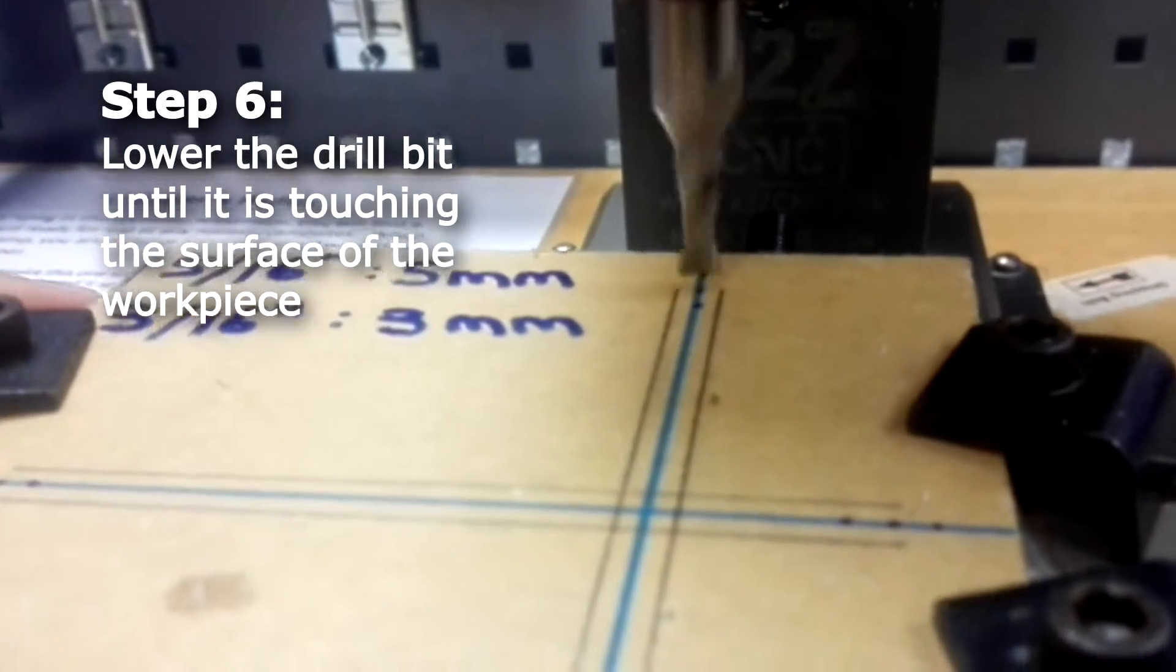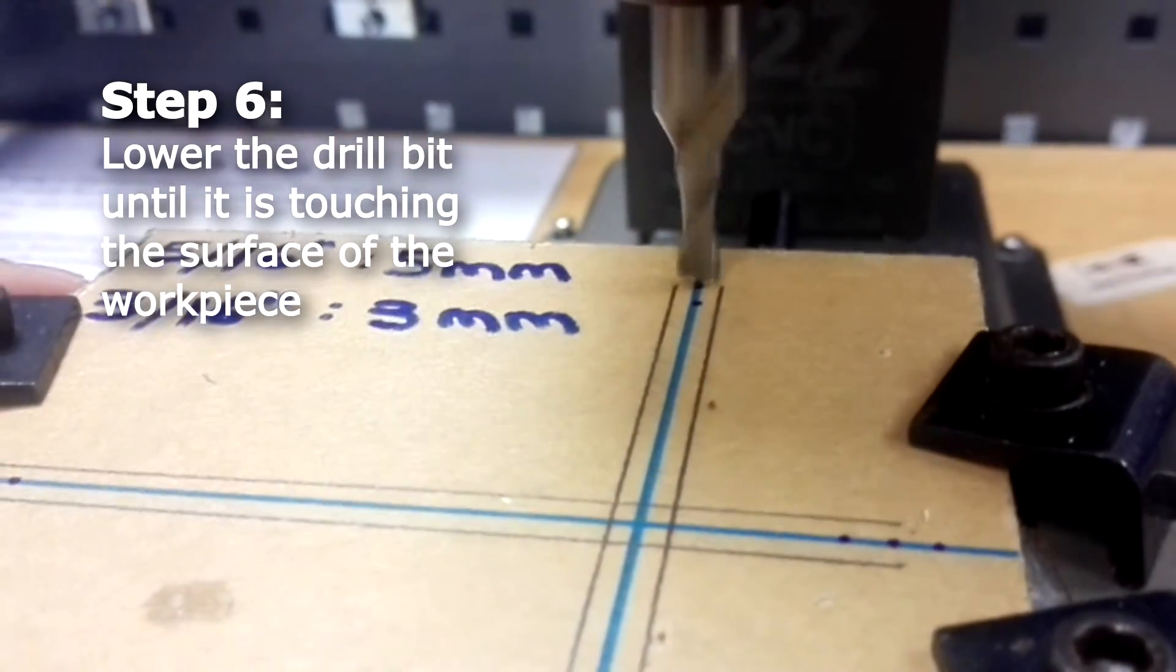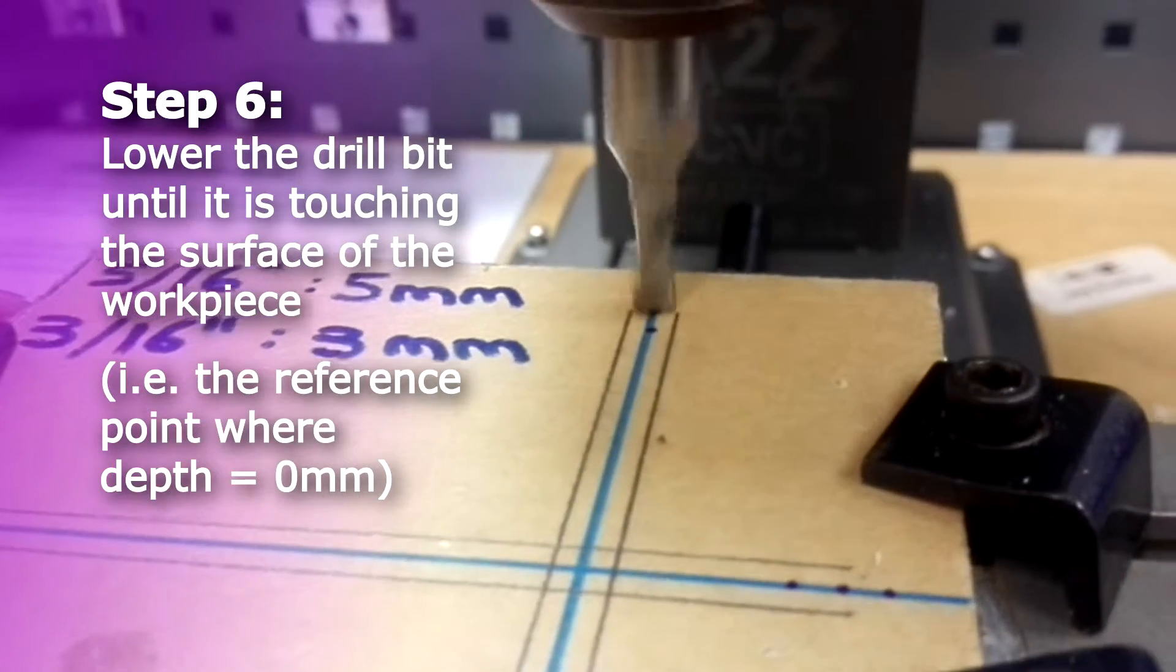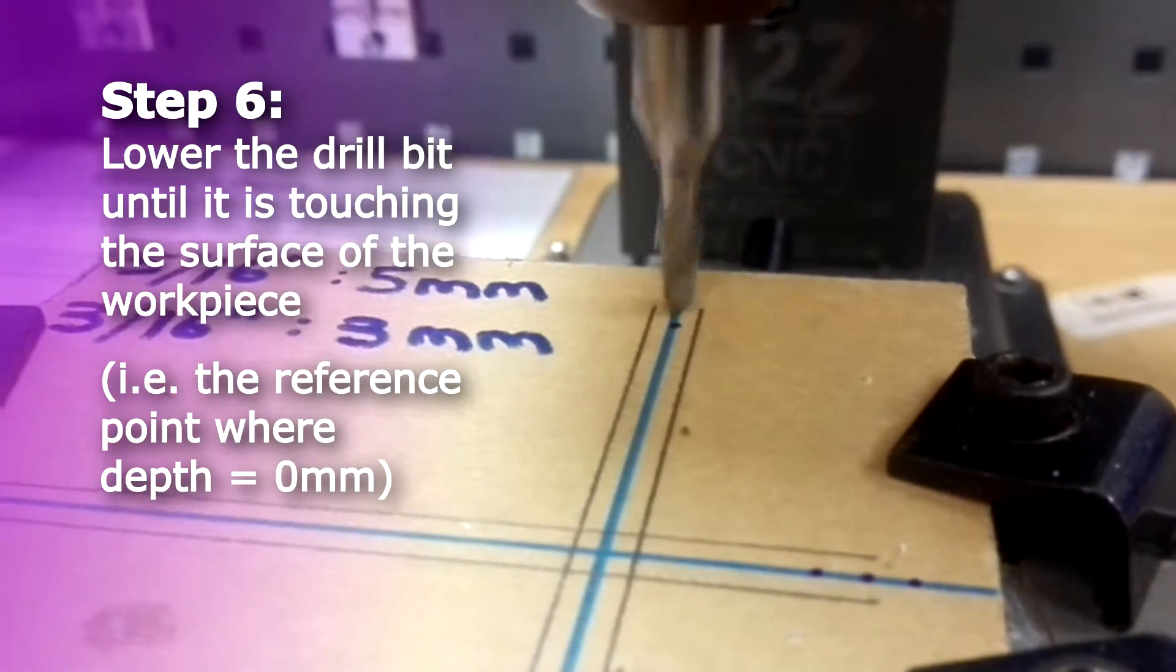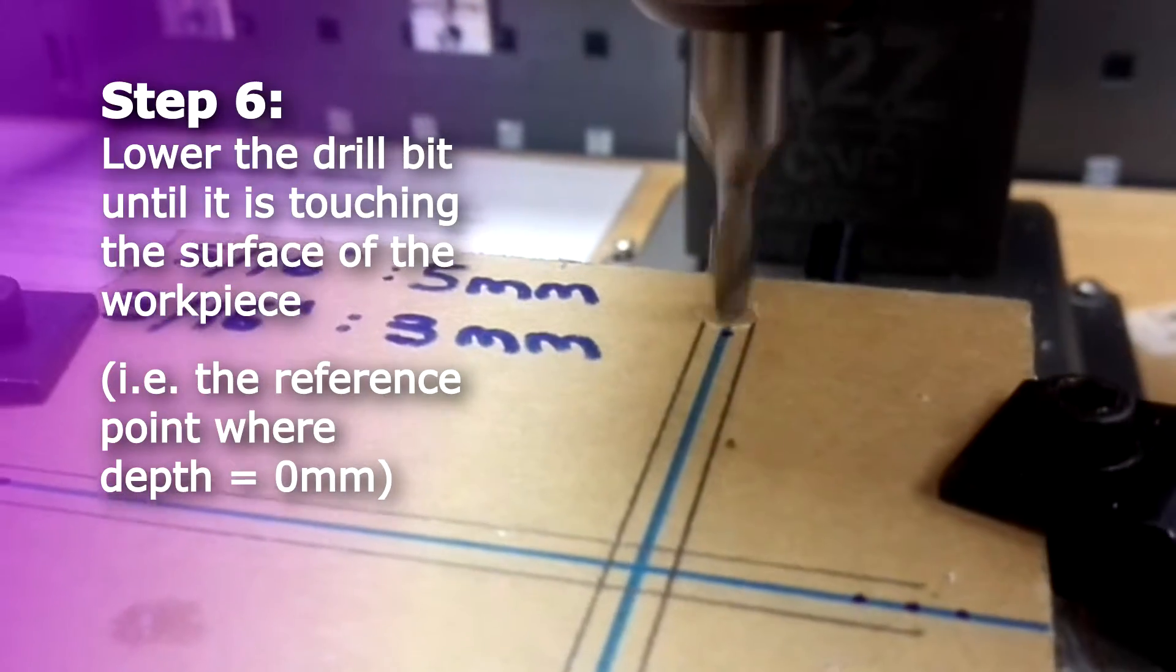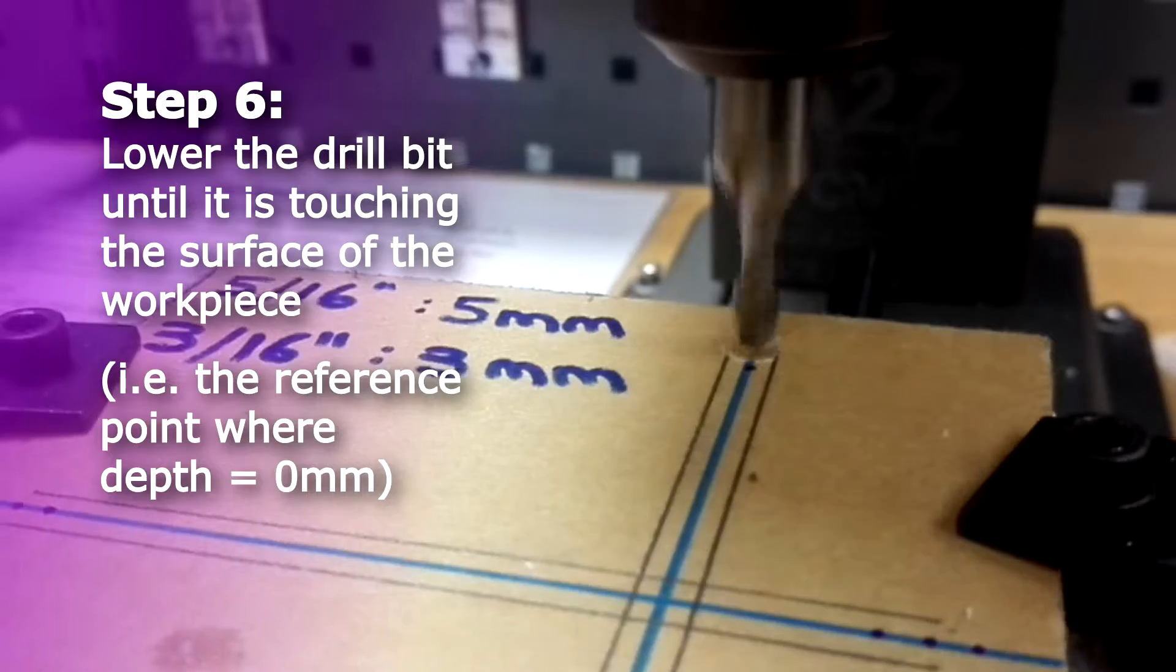Now slowly lower your Z axis. And because this is acrylic, there is a piece of paper just on it. Now you notice that the paper is starting to peel off. This will be your starting point.